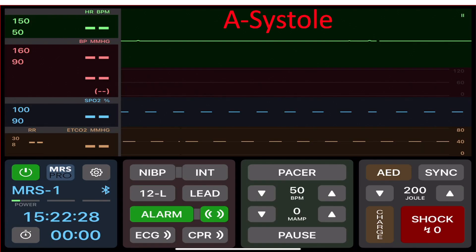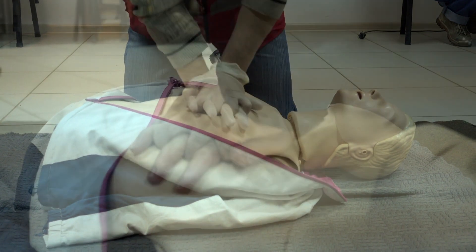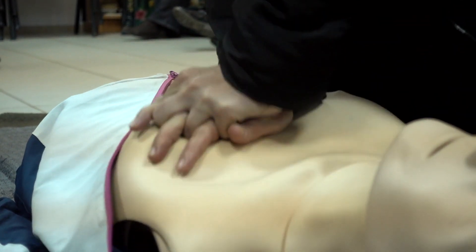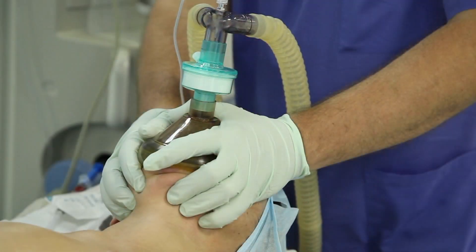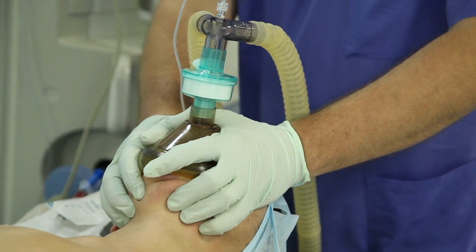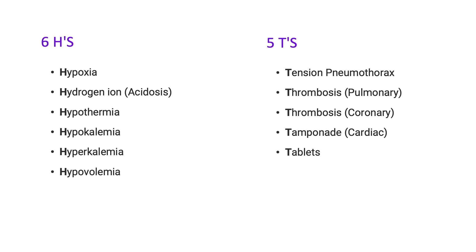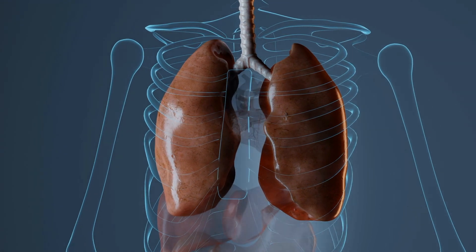We resume high-quality CPR — pushing hard, pushing fast, no delay. We should also consider our reversible causes, our H's and T's. I believe in a head-to-toe approach to make it easier to remember. Thinking about the head: if I'm ventilating well with good chest rise and oxygen is connected, I'm ruling out hypoxia and acidosis. If I can feel a strong pulse with compressions, I can think about tamponade, tension pneumothorax, and pulmonary embolism — all part of obstructive shock.